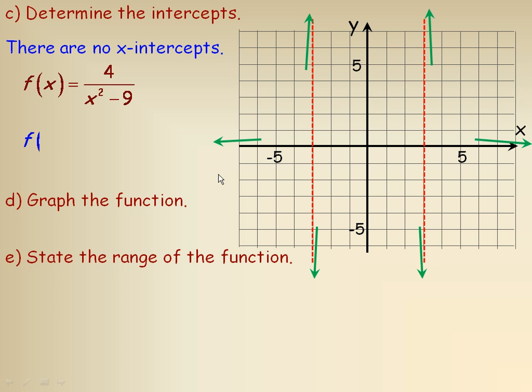Now, there is, however, a y-intercept, and we find the y-intercept by putting 0 in place of x. So, 4 over 0 squared minus 9 equals just negative 4 ninths. So, just close to negative 1 half on the y-axis, we'll put a point here, negative 4 ninths. That's the y-intercept.